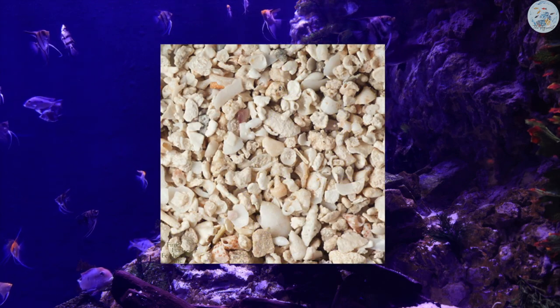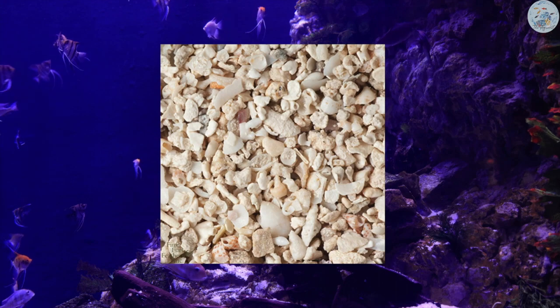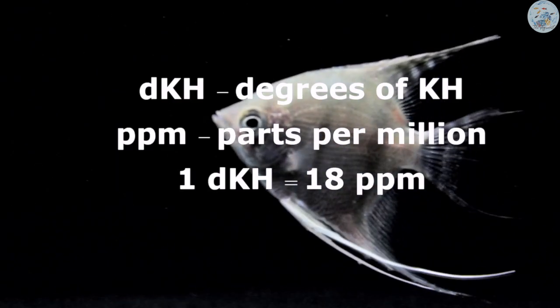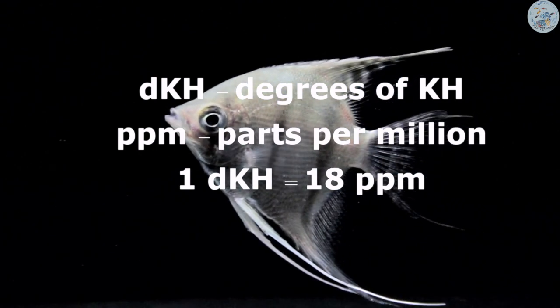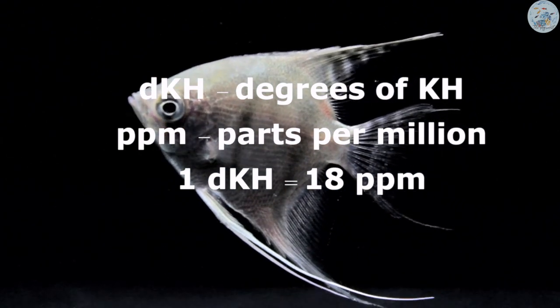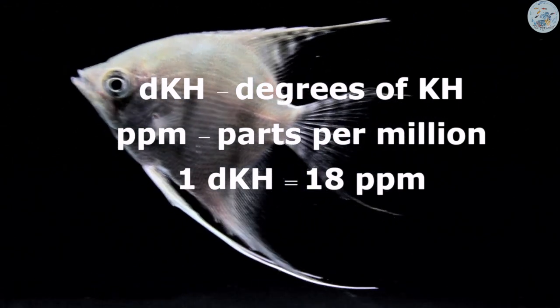To increase the KH level and accordingly the buffering capacity, you can use crushed shells or corals, which will also increase your pH level. The KH is measured in degrees of KH, with the symbol dKH, or can be measured in parts per million (ppm), where 1 dKH equals 18 ppm. For fresh water you would target a KH between 4 and 8 dKH, or between 72 to 144 ppm.